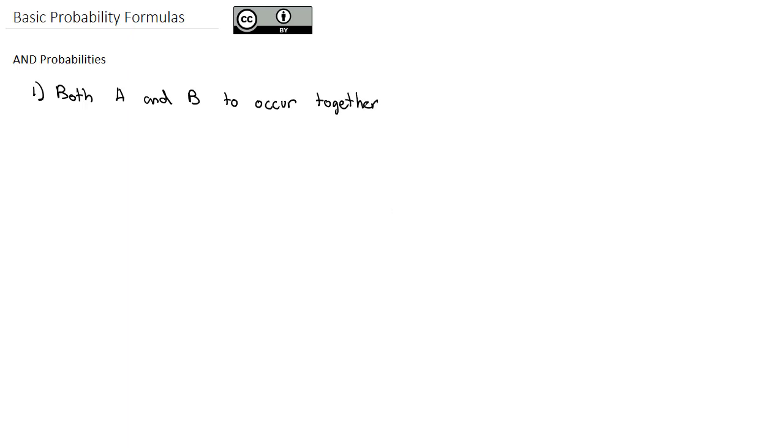So with the OR probabilities, we only wanted one of them, or maybe both. Here we need both of them to occur together. And the formula for these AND probabilities, we write the probability of A AND B is equal to the probability of A, the first probability, times the probability of the second thing, given the first thing has already occurred.